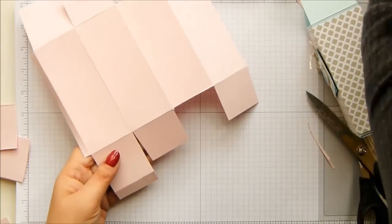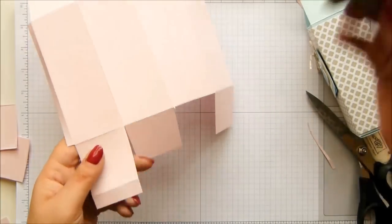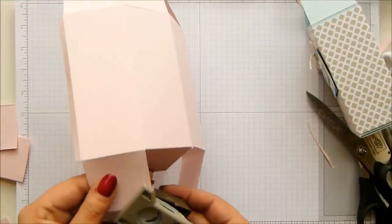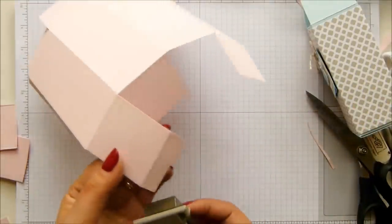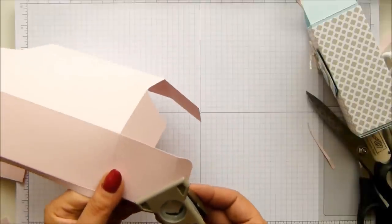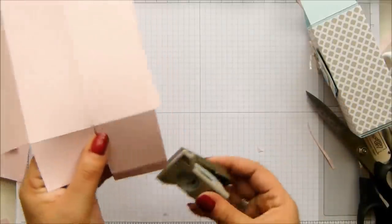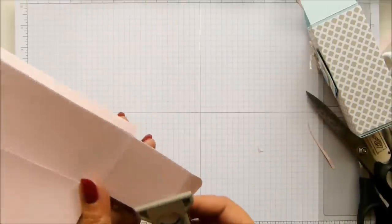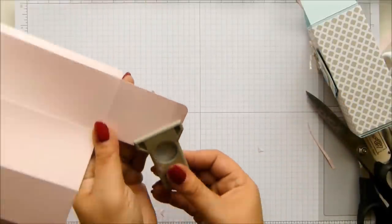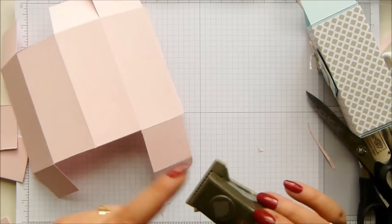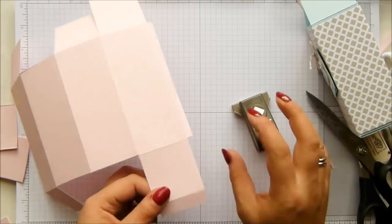We need to round these corners just to make life easier when you close. This is the project life corner rounder and every now and again somebody will say is it different to our old one that retired over a year ago. Yes, it's got a deeper arc so you get a more rounded part.